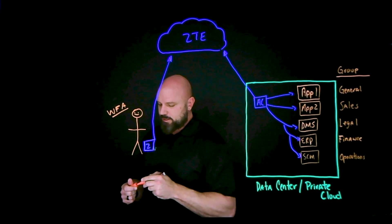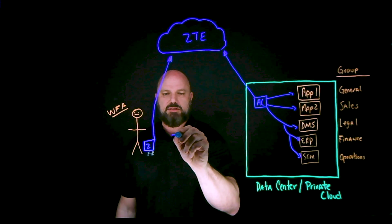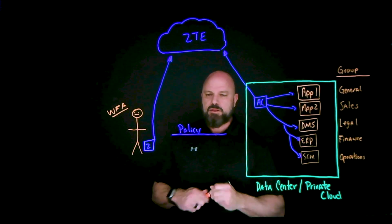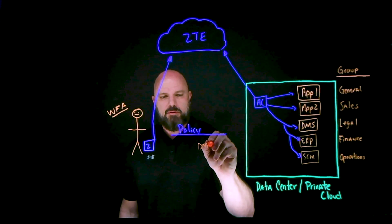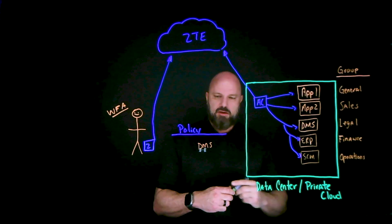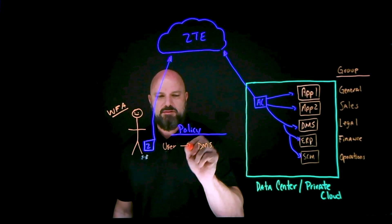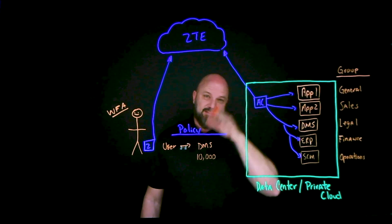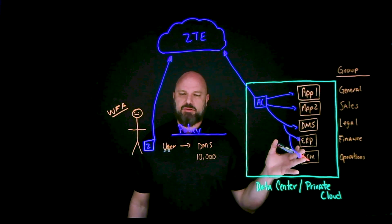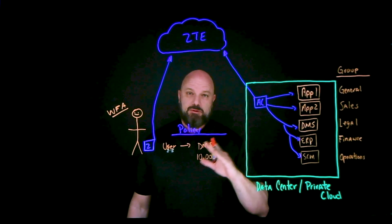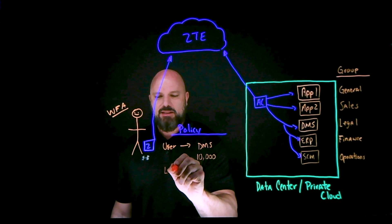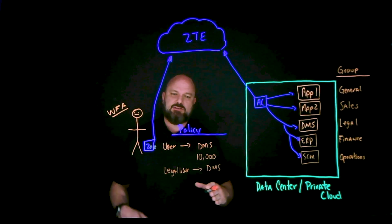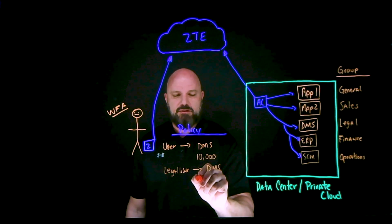Let's pick this apart. You'll have a policy in here — let's focus on the DMS application. Before, a rule says any user can talk to DMS, which turns out to be like 10,000 people. But based on the traffic patterns we're seeing, DMS is just the legal team only. So we change the user group attribute from anyone to legal users only, and that takes the attack surface from 10,000 people down to maybe 70.